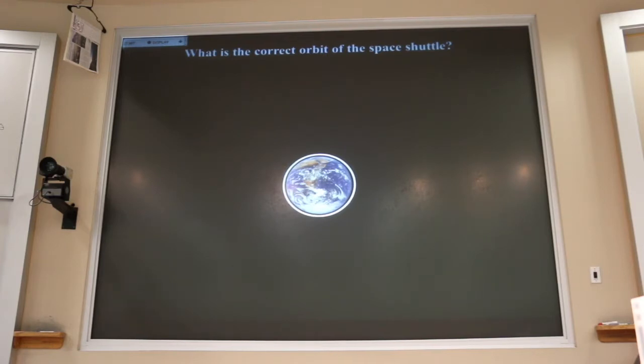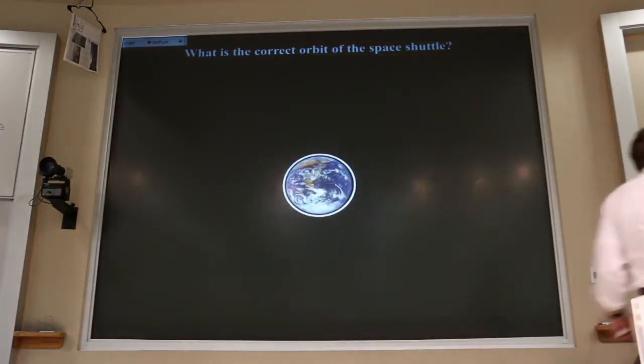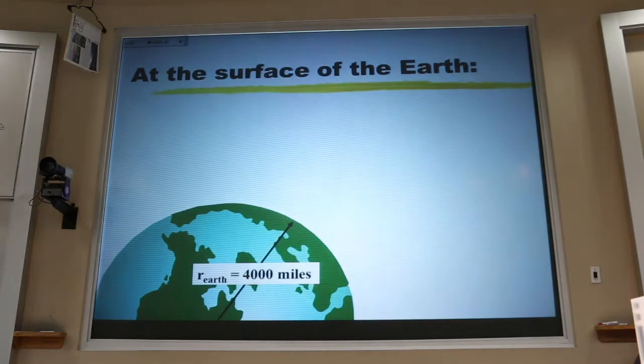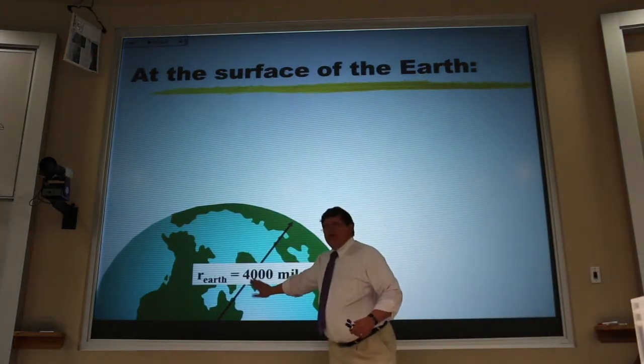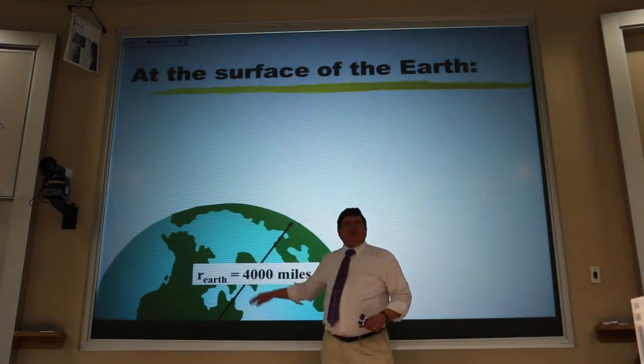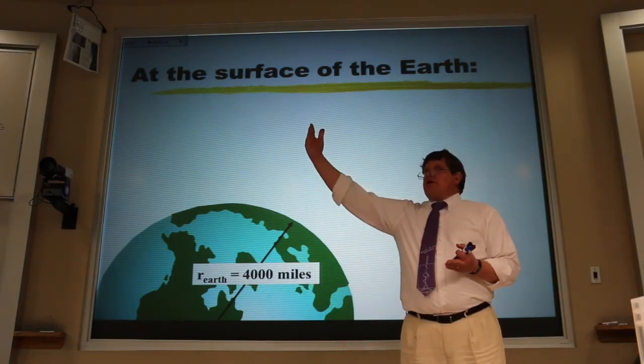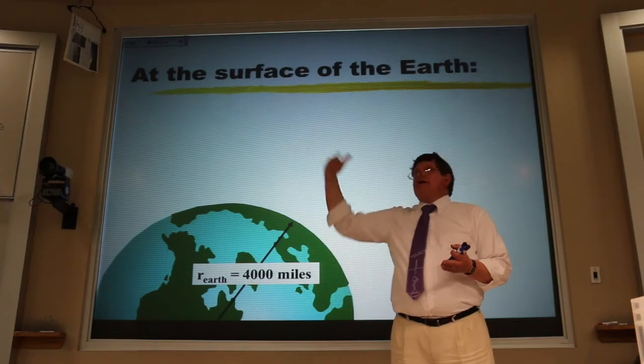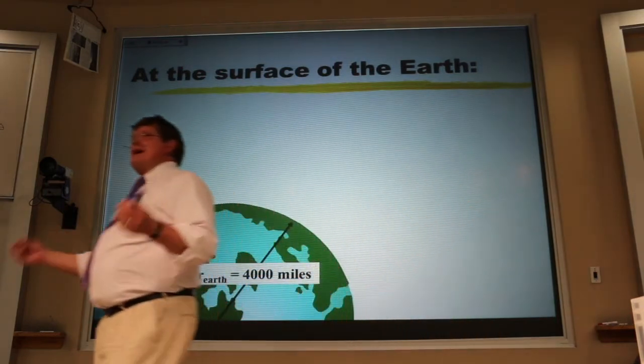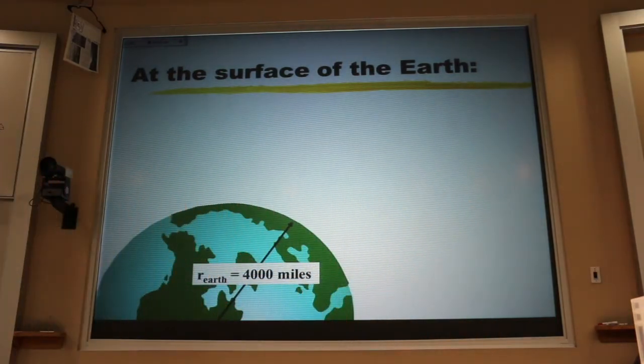He said, well, about 400 miles. So, if we use American units, the radius of the Earth is about 4,000 miles. If they go another 400 miles above the surface of the Earth, they're going an extra 10% away from the center of the Earth.